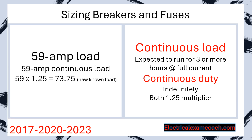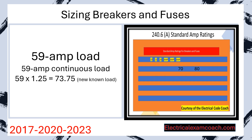Let's take our 59 amp known load from before and imagine it was told to us as a 59 amp continuous load. What we would do is take our 59 amps and multiply it by 1.25. That gives us a new known load of 73.75 — the 59 is gone, and 73.75 is our new known load. We'd head to Table 240.6A, look at the next standard size above 70, which jumps to 80, and we would put this on an 80 amp overcurrent protective device.